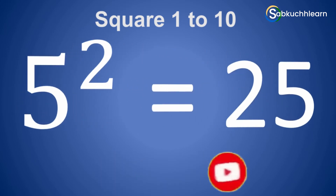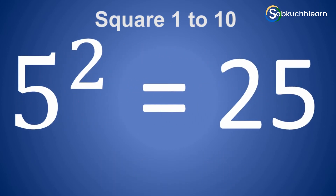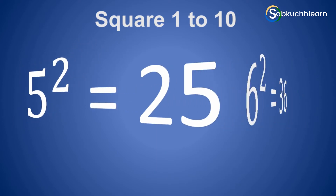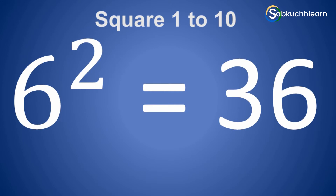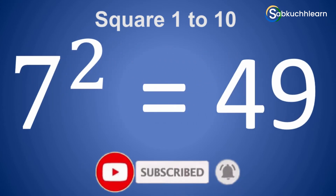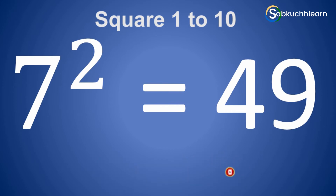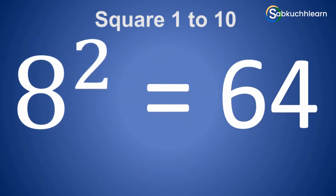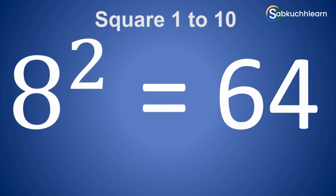5 square is 25. 6 square is 36. 7 square is 49. 8 square is 64.